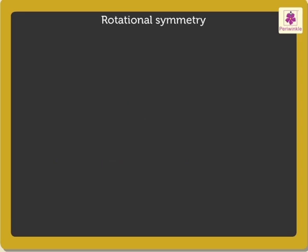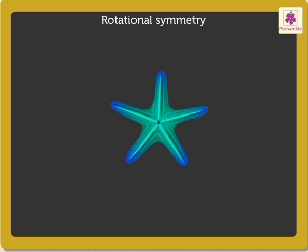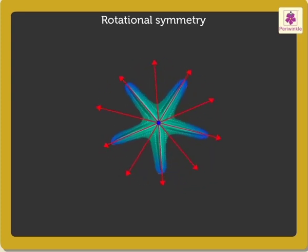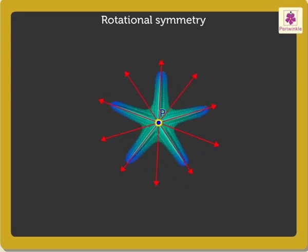Now, look at this starfish. It has five lines of symmetry. These lines meet at point P. This starfish can be rotated about a fixed point P. This fixed point about which the starfish rotates is called its center of rotation.